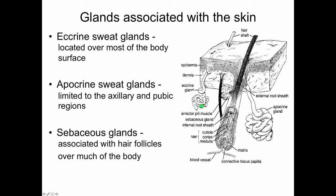There are apocrine sweat glands. The apocrine sweat glands are limited to the axillary and pubic areas. The apocrine gland empties into the hair follicle, whereas the eccrine sweat gland has its own duct to the surface. And then there are sebaceous glands, an example shown in the diagram. Sebaceous glands are associated with hair follicles, and wherever there are hair follicles over the body, there may be associated sebaceous glands.